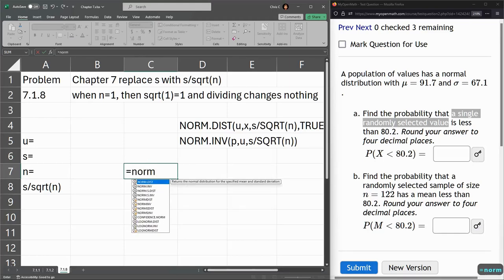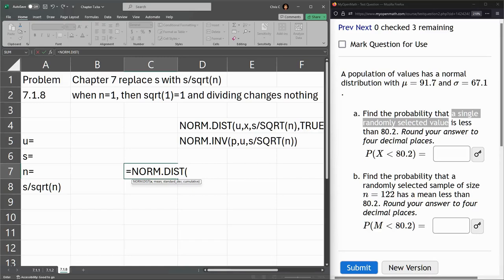So I'm doing norm.dist with the tab key. I'm going to type values in. x is the 80.2. The mean is mu, 91.7. Standard deviation 67.1.